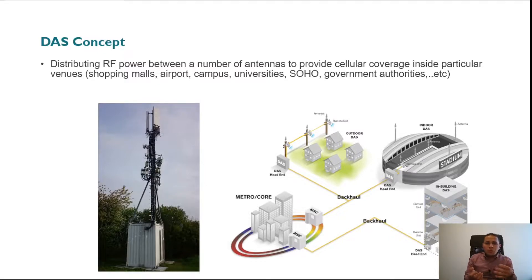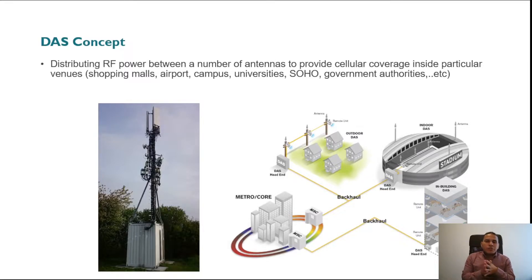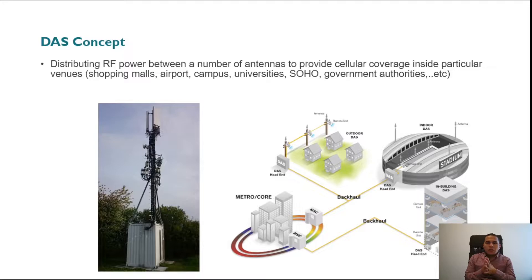This building might be a shopping mall, airport, campus, university, tunnel, skyscraper, or whatever — this is what we mean by distributed antenna system. As a mobile user and smartphone subscriber, you usually expect seamless wireless connectivity inside the building.